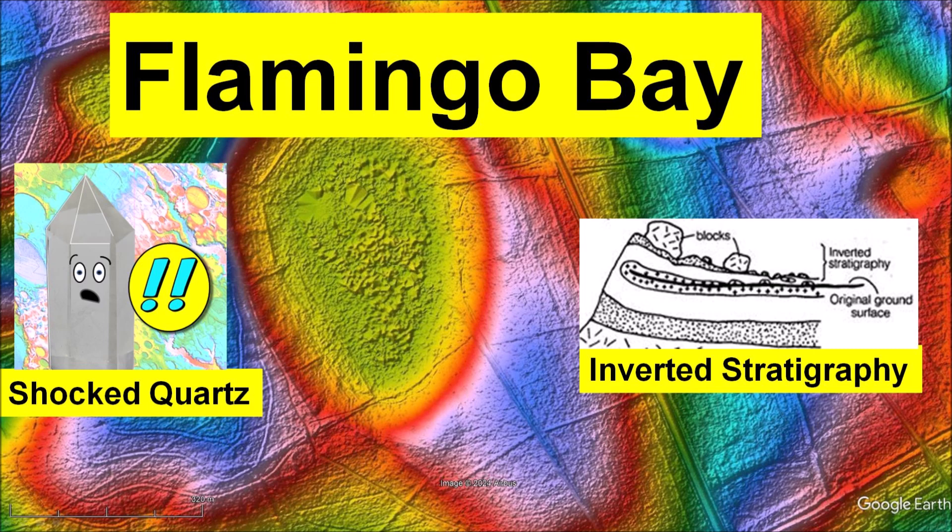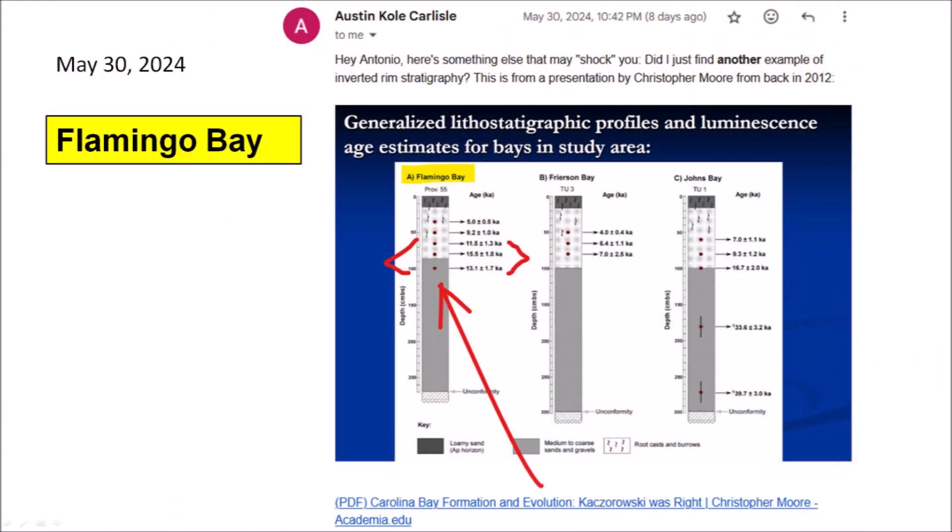This information was brought to my attention in two emails. On May 30, 2024, Austin Cole Carlyle sent me an email with an image of a core showing inverted stratigraphy. He said: 'Hey Antonio, here is something else that may shock you. Did I just find another example of inverted rim stratigraphy? This is from a presentation by Christopher Moore from back in 2012.' Austin Cole Carlyle knew of another case of inverted stratigraphy that I had discussed in a previous video.